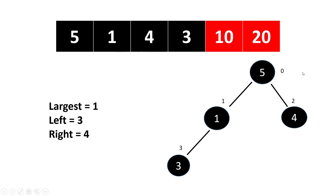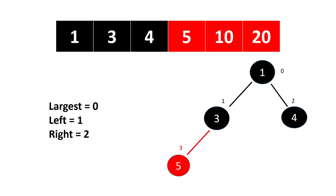The largest pointer is now at index one. Left becomes index three and right becomes index four. We check if the element at index three is greater than at index one — yes, three is greater than one — so largest becomes index three. We have no right node, so we simply swap the element at index three and the element at index one, and the max heap is generated.